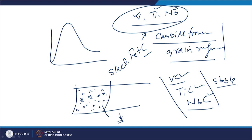The reduced carbon content that has not gone into solution in the austenitic state will not contribute to hardenability. The effectiveness of the carbon equivalent is realized when all these elements go into solution and form a homogeneous solid solution. But if these elements are forming carbides and not getting dissolved, their effect on the carbon equivalent will not be high, since some carbon is being consumed by these carbides.